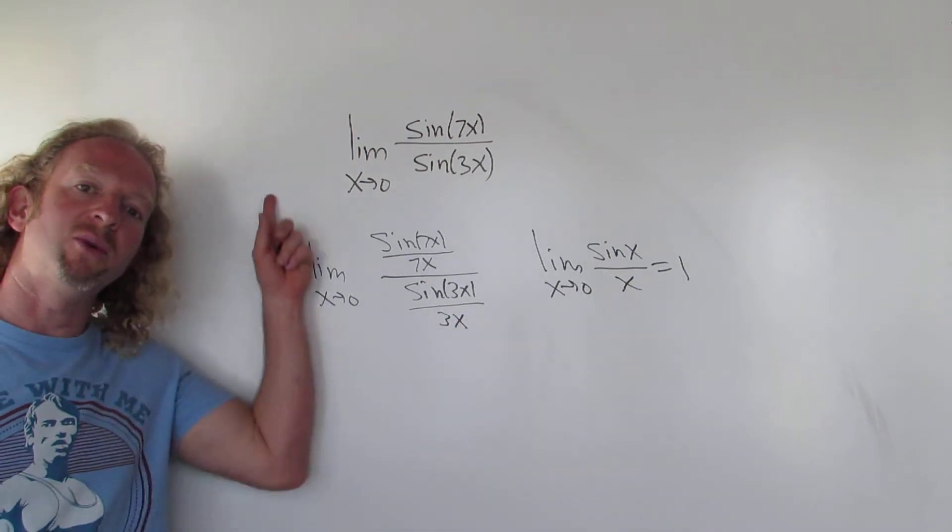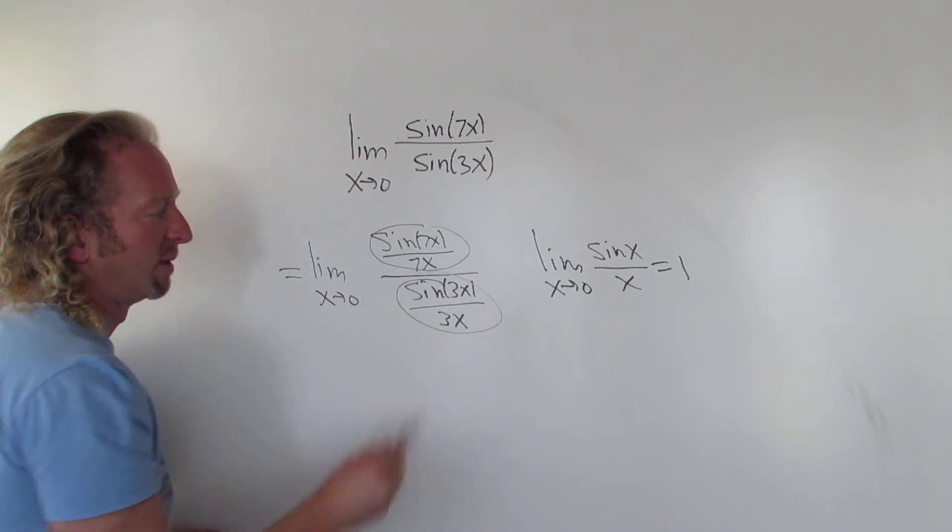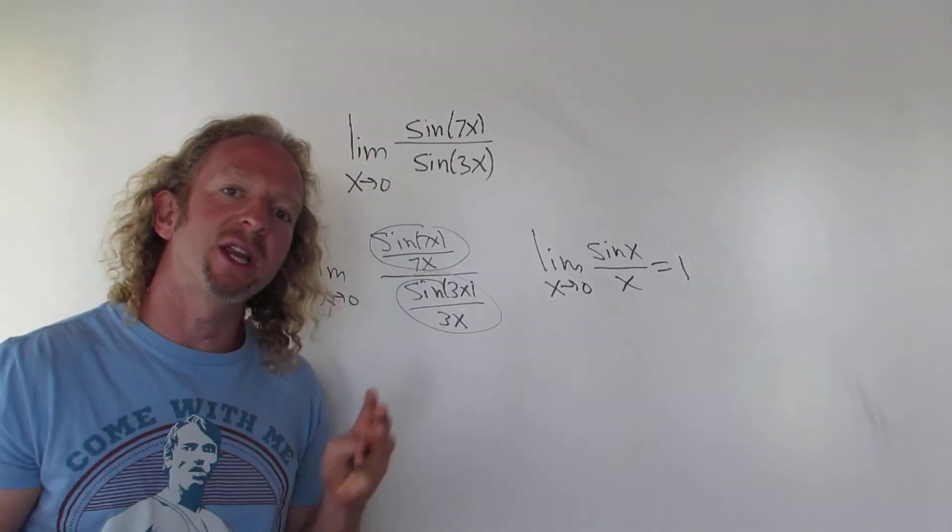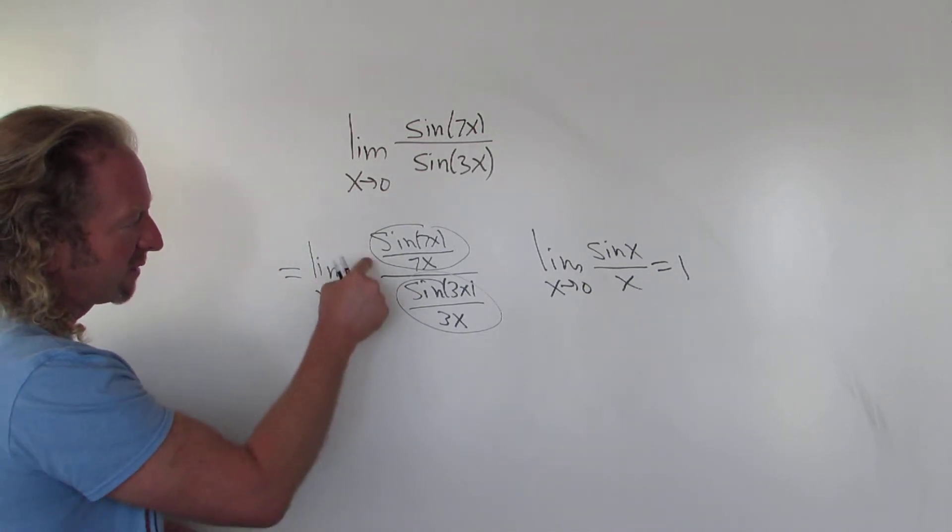Now it would be really nice if these were actually equal, right? Because this piece here is going to be 1, and this piece here is also going to be 1. Whenever these numbers match and this piece is going to 0, the limit is equal to 1.